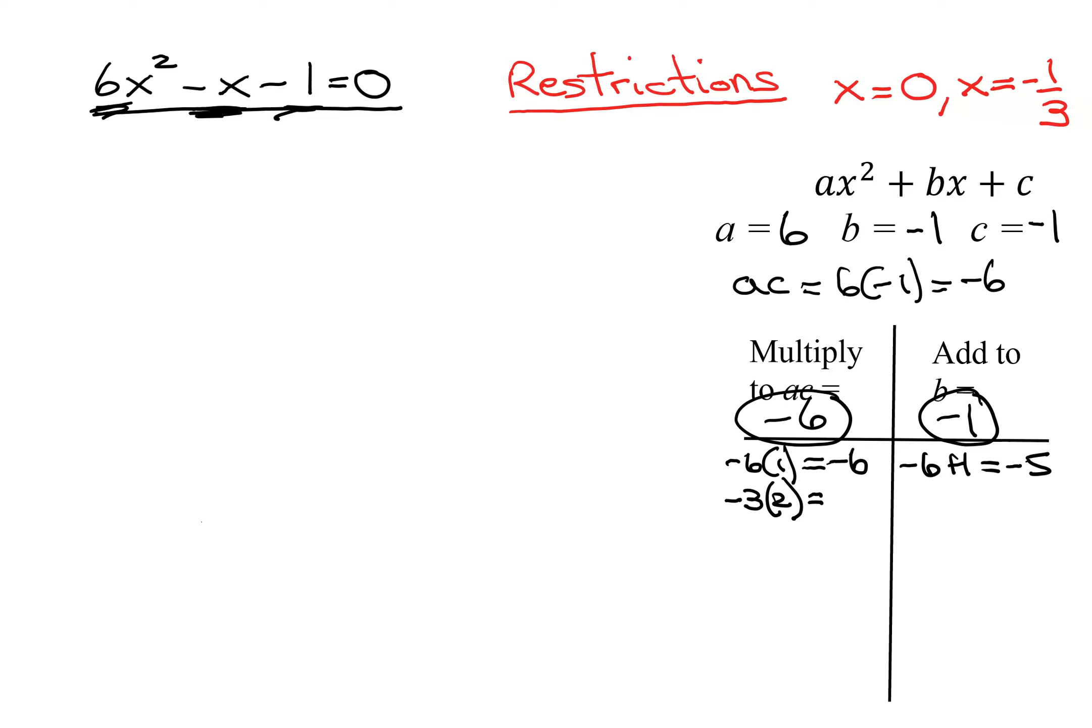Remember, the big one has to be negative. It's negative 6, negative 3 plus 2. Ah, that adds to my negative 1. So these are the two numbers I'm looking for for rewriting this middle term here.